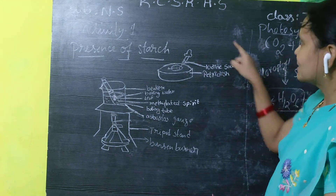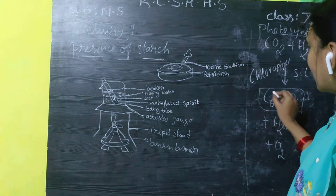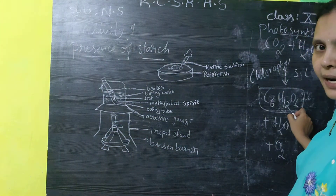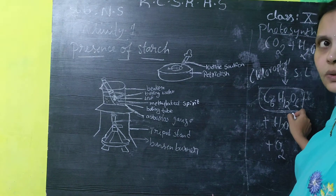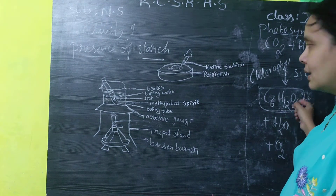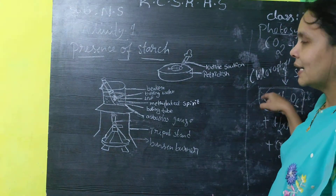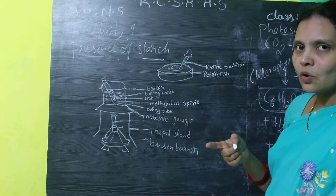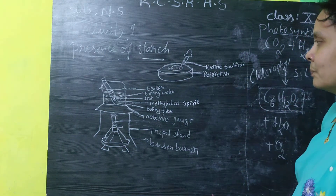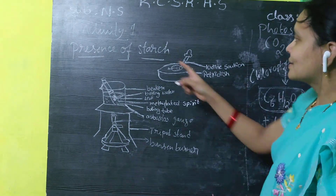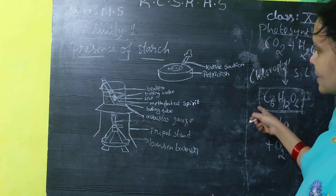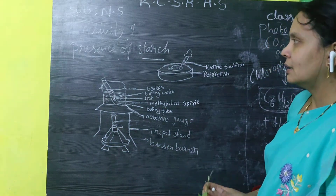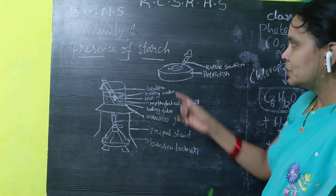So today is Activity One, about carbohydrates. The simple molecule is a carbohydrate — that is glucose. Glucose can be converted into starch. Now starch is also related to cellulose, as we discussed in the previous class. The starch is prepared during photosynthesis by the plant, and we are checking this through today's activity.